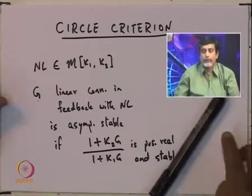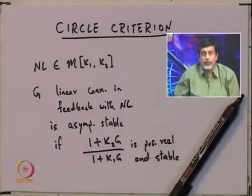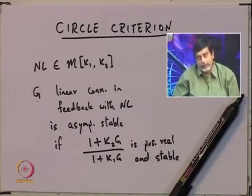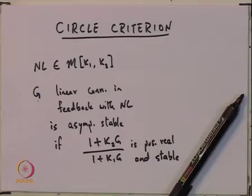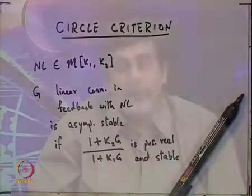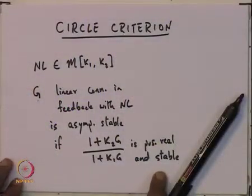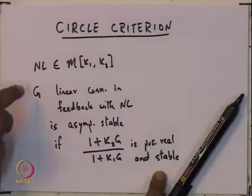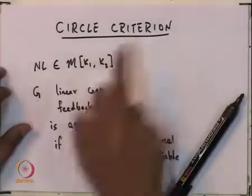Checking for positive realness — one way to check for positive realness is by using the Nyquist criterion. Now, is there a way to check whether 1 plus K2·G upon 1 plus K1·G is positive real, but we still want to use the Nyquist plot? It turns out that this is possible. And this way of predicting whether 1 plus K2·G upon 1 plus K1·G is positive real and stable by using the Nyquist plot of G — this is what the circle criterion is.